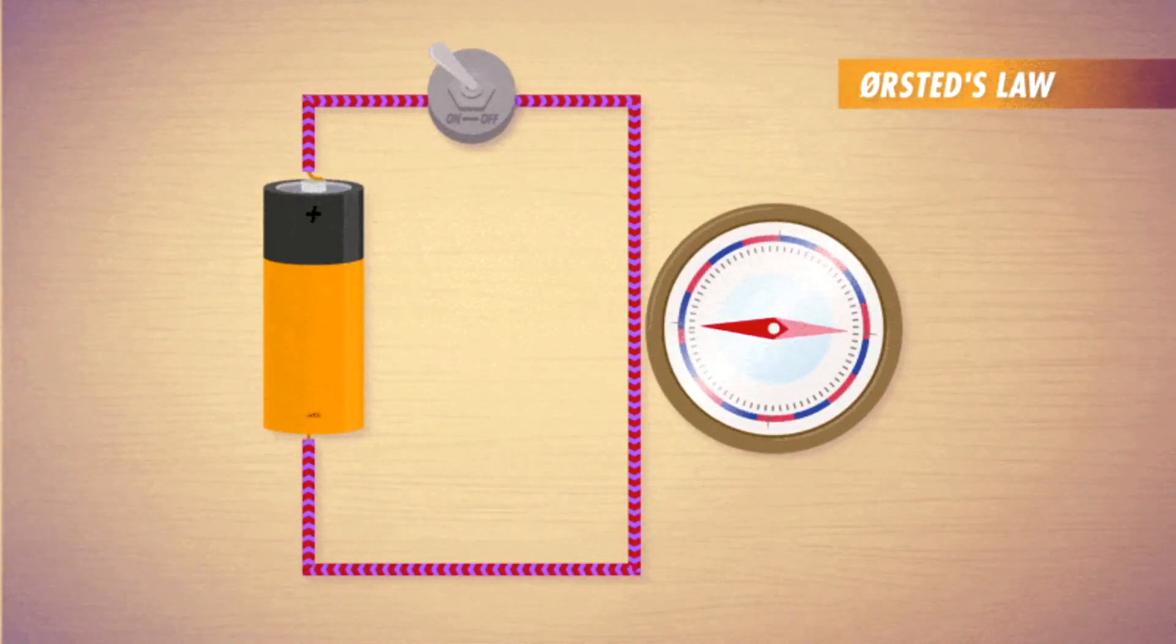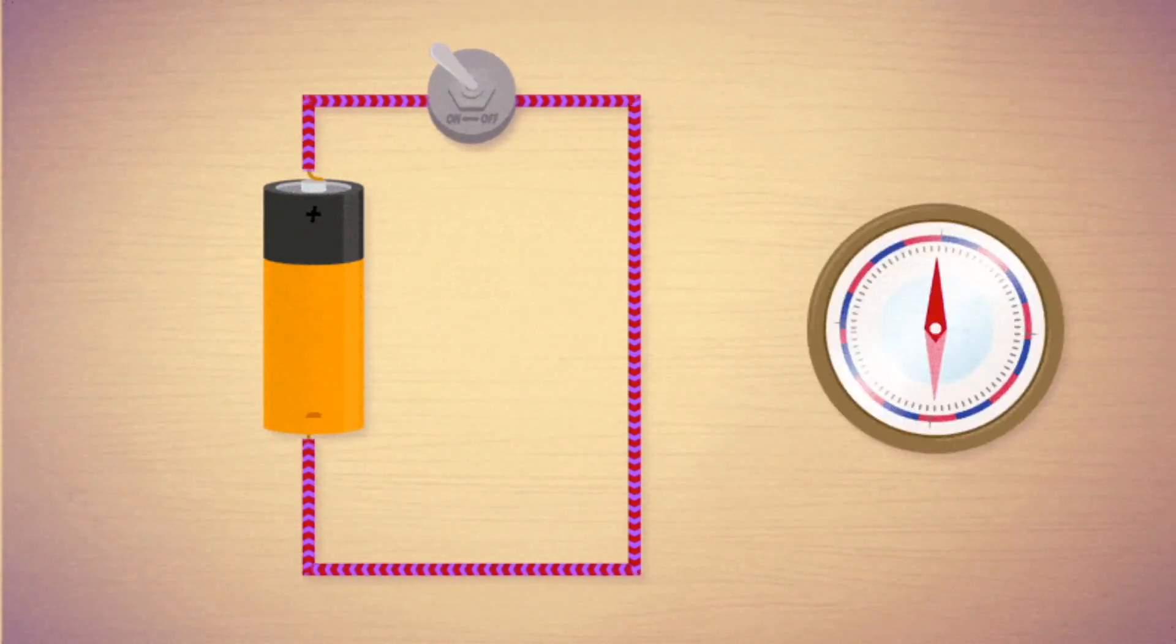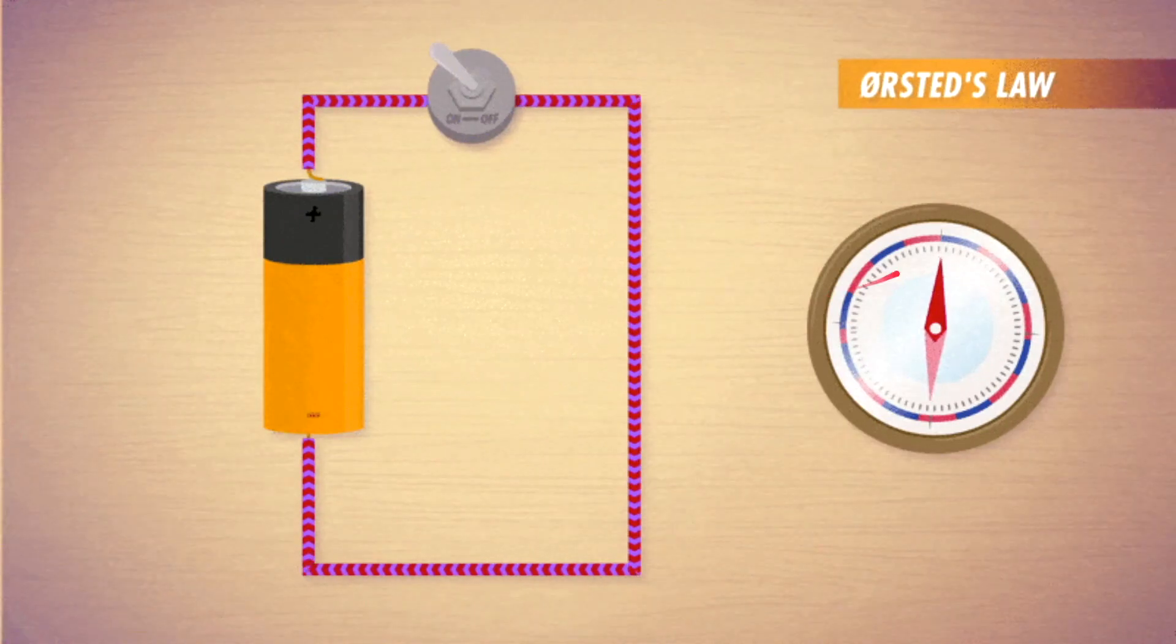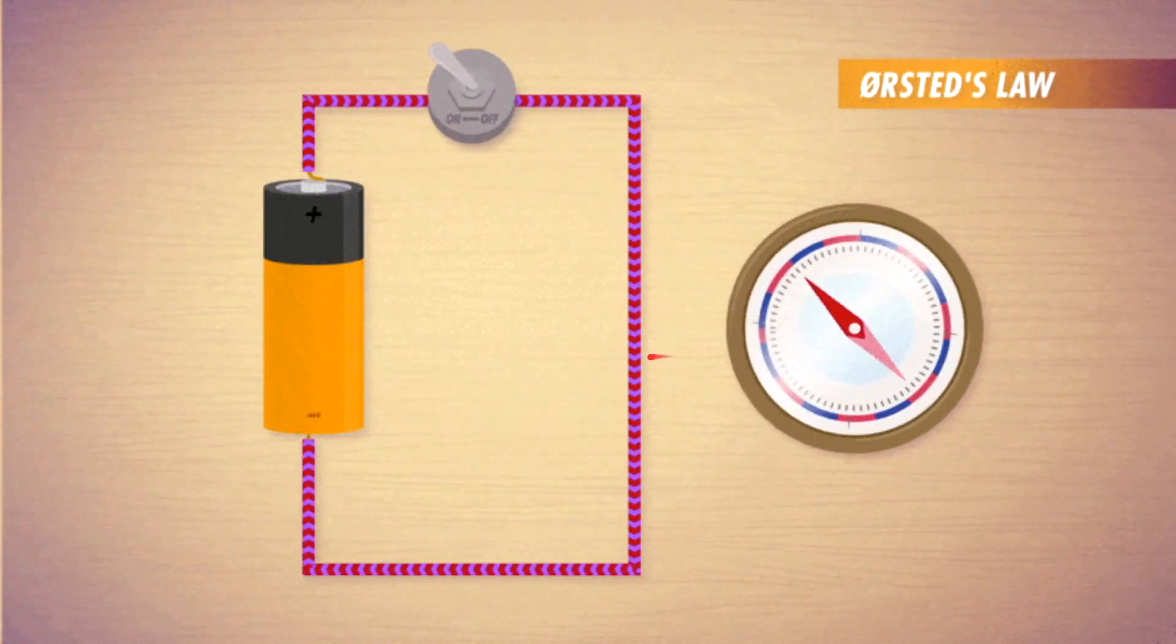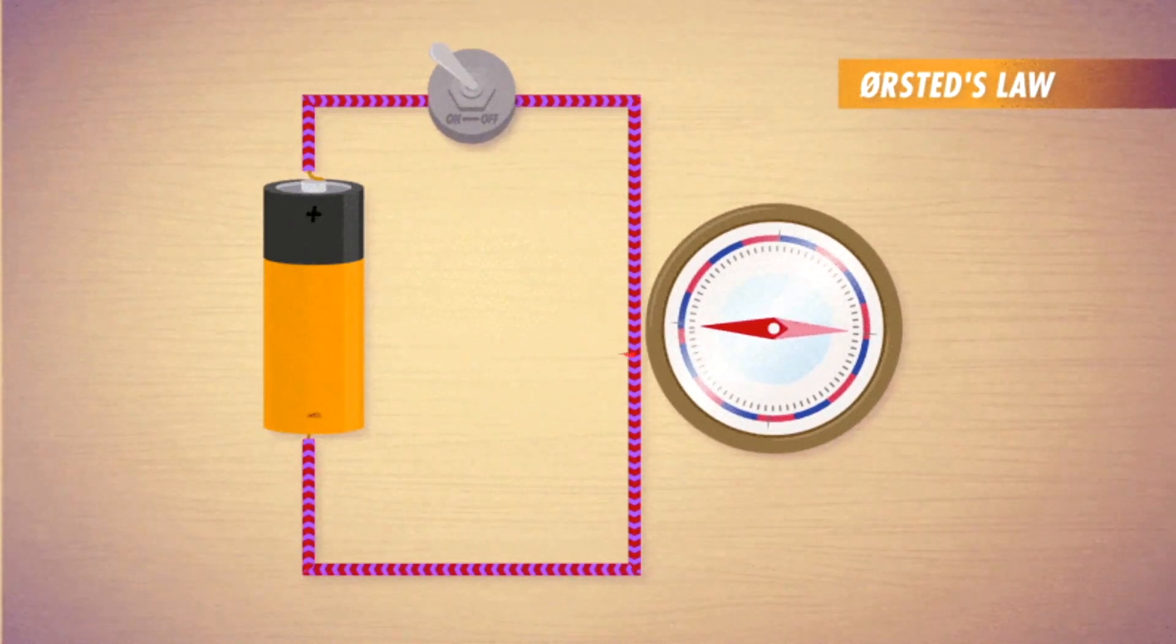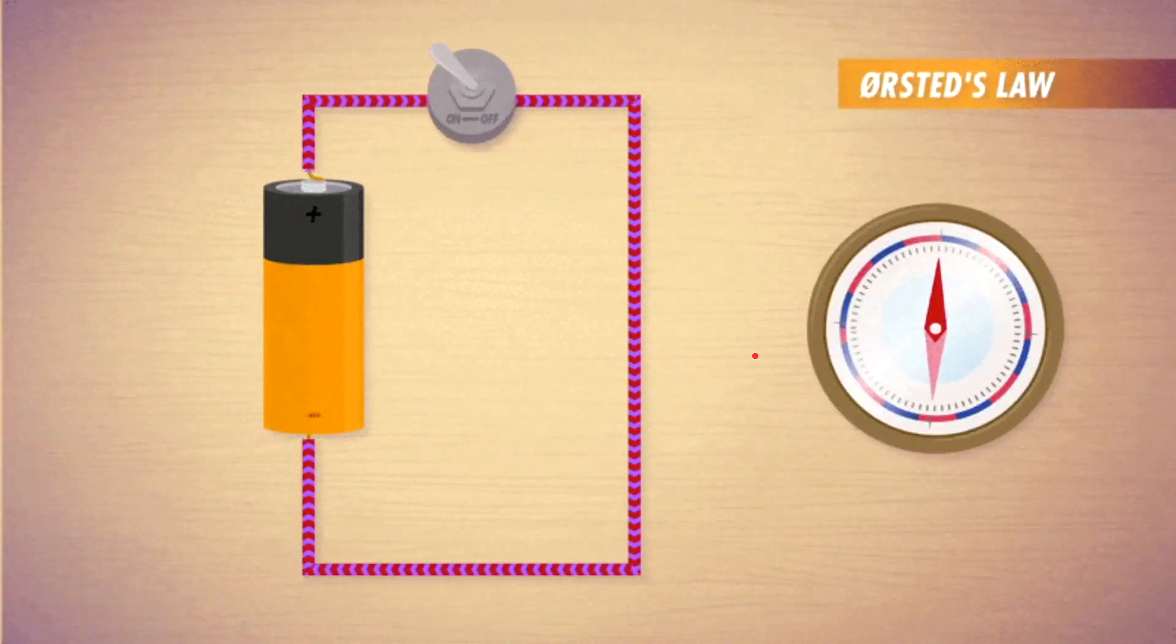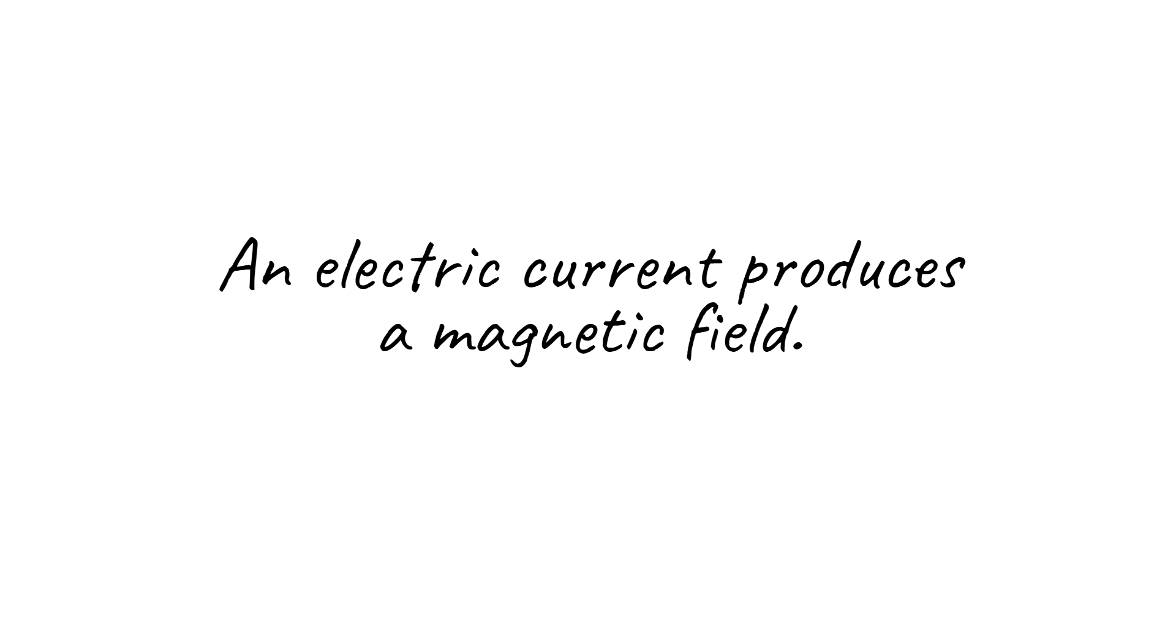When Ørsted was doing his demonstration on that fateful day in 1820, he was using a regular compass magnet. But when he brought the magnet close to a wire carrying a current, the magnetic field from that current exerted a force on the needle, moving it to point in a different direction. Ørsted had discovered one of the fundamental principles of electromagnetism: an electric current produces a magnetic field.